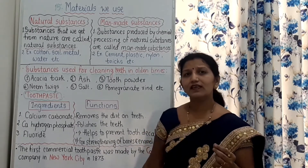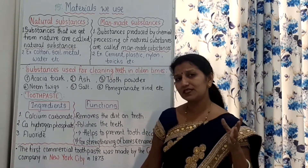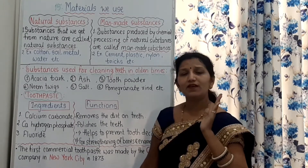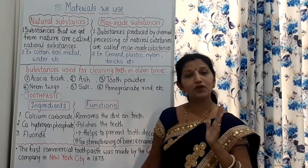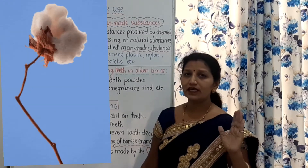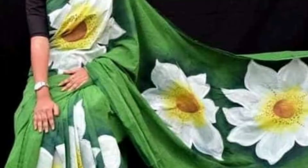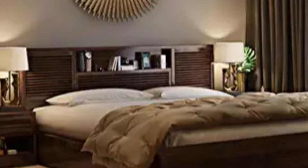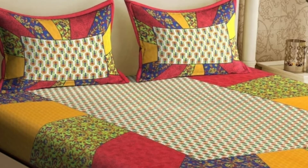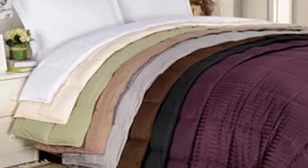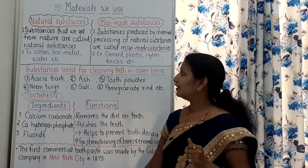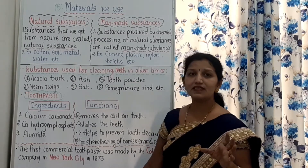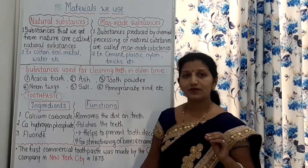We know that one substance can make so many objects. That means, from one type of substance, for example from cotton, we can make so many objects like sarees, beds, pillows, bedsheets, bed covers, curtains, blankets. All these things can be prepared by using cotton. And in this way, these substances are very important in our day-to-day life.